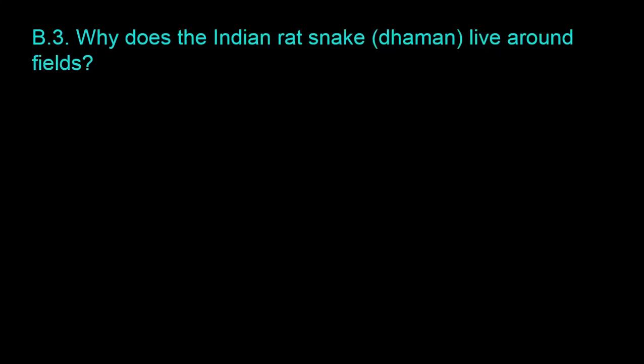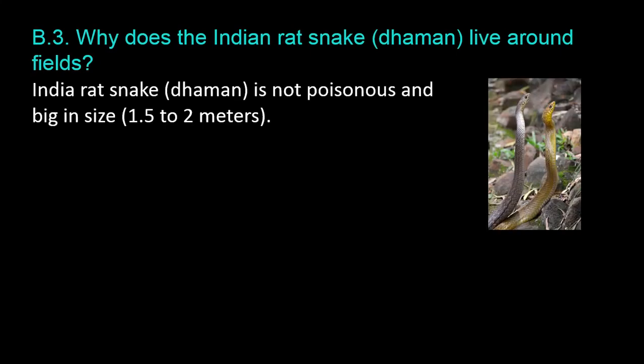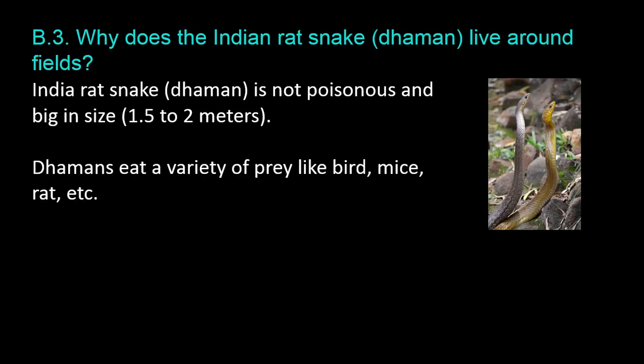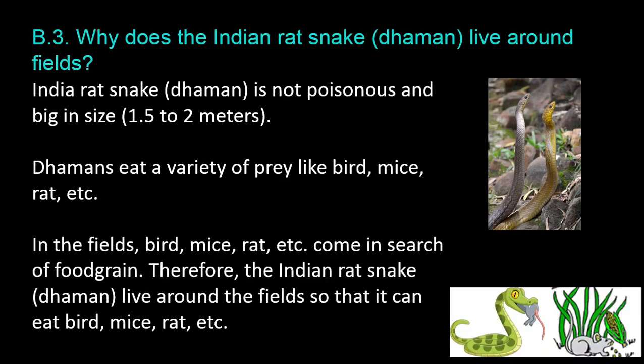Question B.3: Why does the Indian rat snake, damon, live around fields? The Indian rat snake, damon, is not poisonous and is big in size, 1.5 to 2 meters. Damons eat a variety of prey like birds, mice, and rats. In the fields, birds, mice, and rats come in search of food grain. Therefore, the Indian rat snake lives around fields so that it can eat birds, mice, rats, and similar prey.